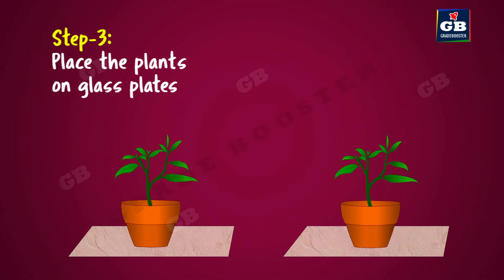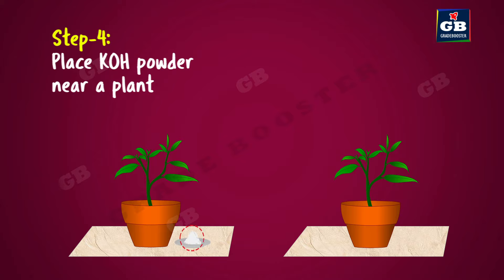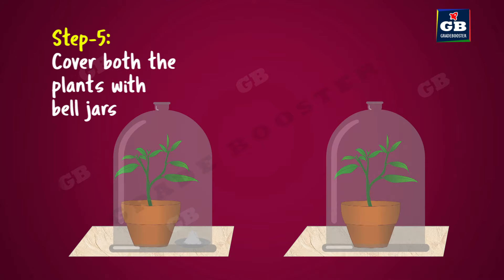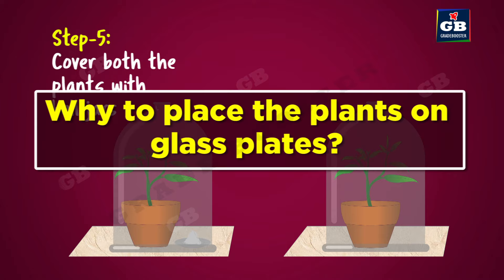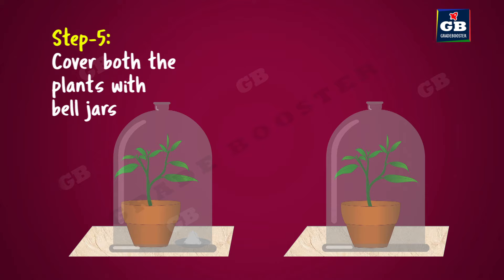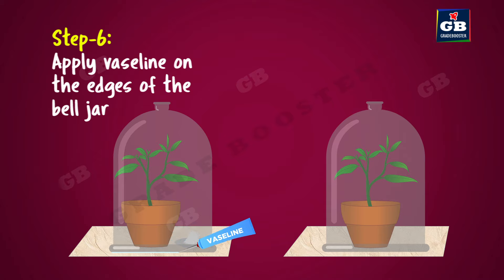Place the plants on glass plates or smooth finished tiles. Place a watch glass containing potassium hydroxide by the side of one of the plants. Cover both the plants with separate bell jars. We place the plants on glass plates because we want them to be in an airtight environment, with the bell jar at the top. We apply Vaseline or grease at the edges to prevent the entry of air.